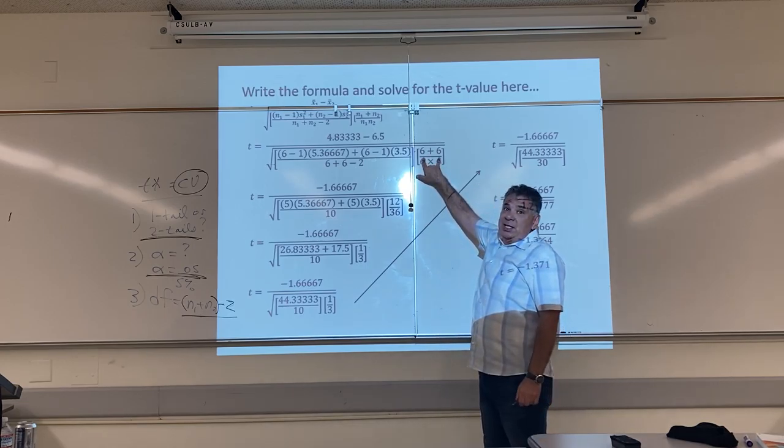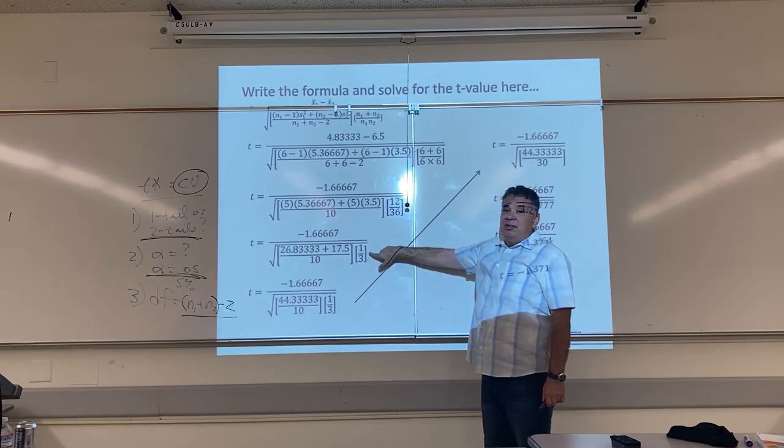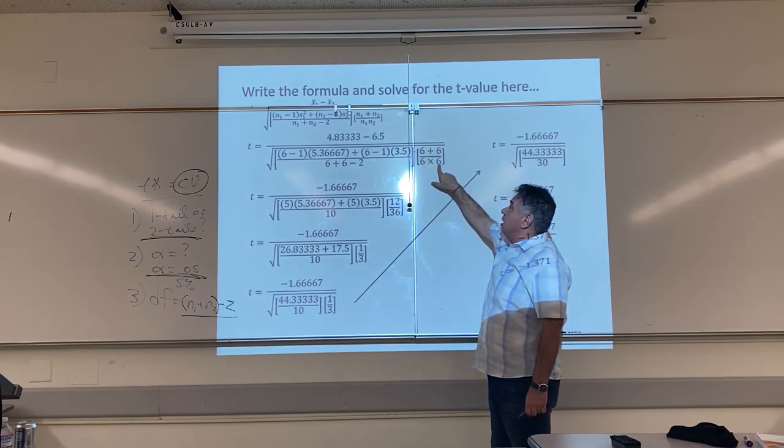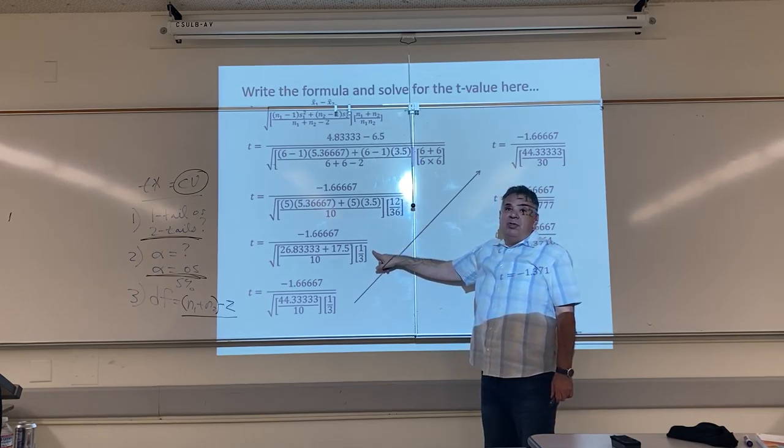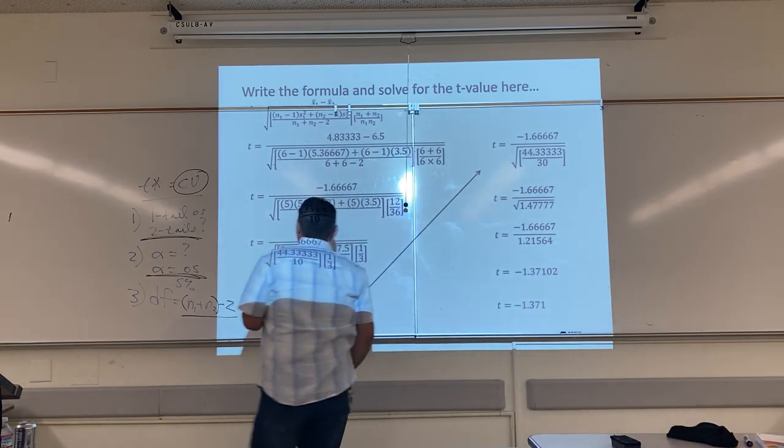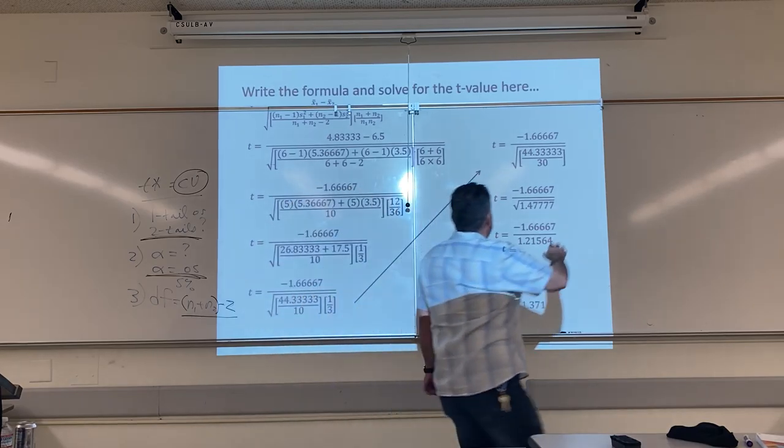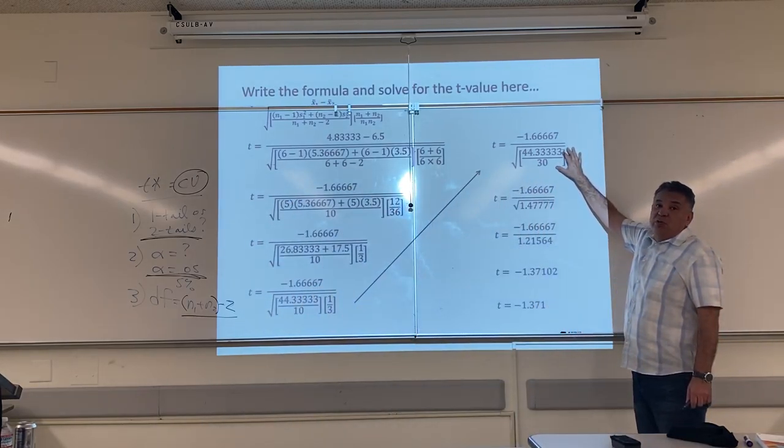When the sample sizes are the same, this answer will simplify to a simpler fraction. 6 plus 6 is 12. 6 times 6, it's 36. So in this case, it reduces down to a third. Why is that important? Because now, when I multiply across, I get this really easy number to work with. Remember, smaller numbers are easier to work with.